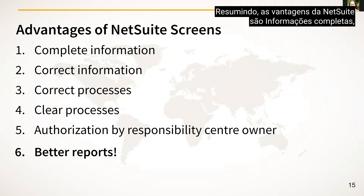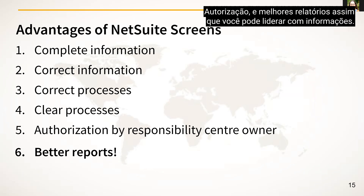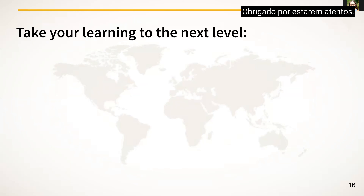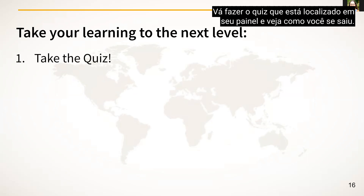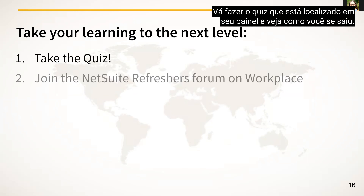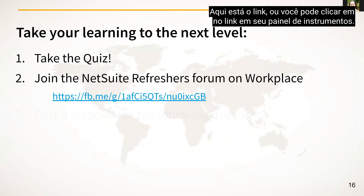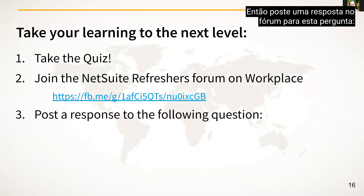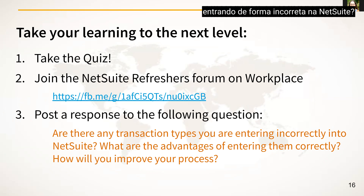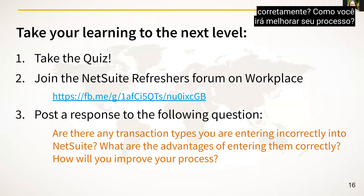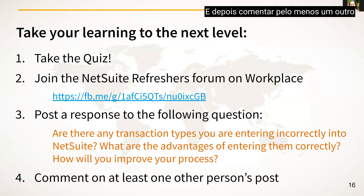To recap, the advantages of NetSuite screens are complete information, correct information, correct processes, clear processes, authorization, and better reports so that you can lead with information. That is the end of this video — thank you for watching. Now go take your learning to the next level: take the quiz located in your dashboard, join the NetSuite Refreshers Forum on Workplace to discuss this week's training, and post a response to this question: Are there any transaction types you are entering incorrectly into NetSuite? What are the advantages of entering them correctly, and how will you improve your process? Comment on at least one other person's post to get the conversation going. Thank you and have a great day.